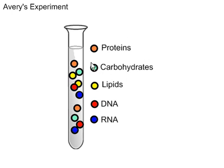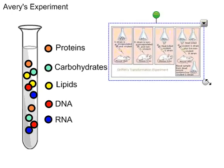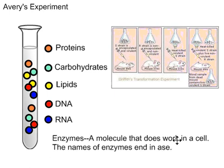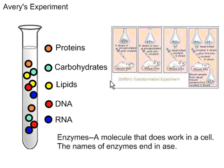He took the S strain from Griffith's experiment, chopped it up, and killed it — dead S strain broken into those five components. He used molecules called enzymes, which are molecules that do work in a cell. Enzyme names always end in -ase. He had five different enzymes, each removing one component at a time: one enzyme that only took out proteins, one that only took out carbohydrates, one that only took out lipids, and so on. He had to do this experiment five times.